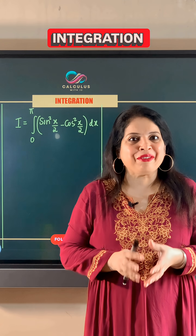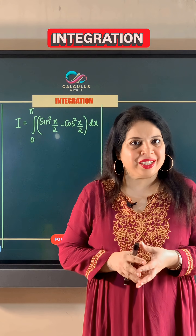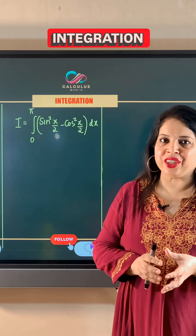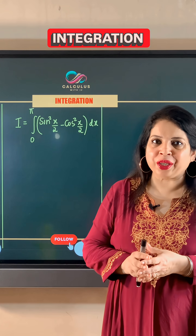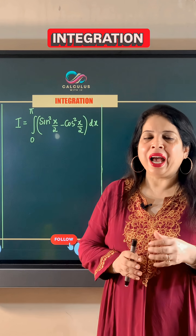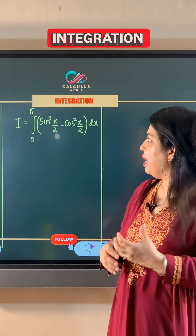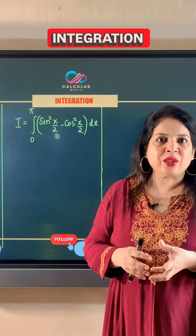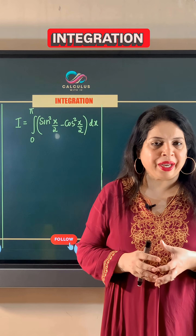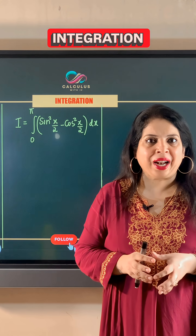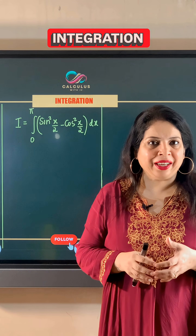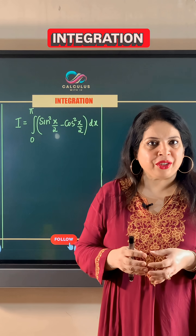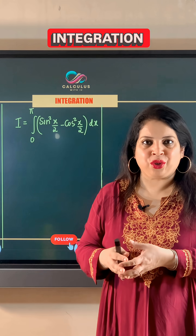This is a definite integration question in which the limits of integration are from 0 to π, and we have sin²(x/2) minus cos²(x/2) as the integrand. The integrand involves trigonometric ratios.